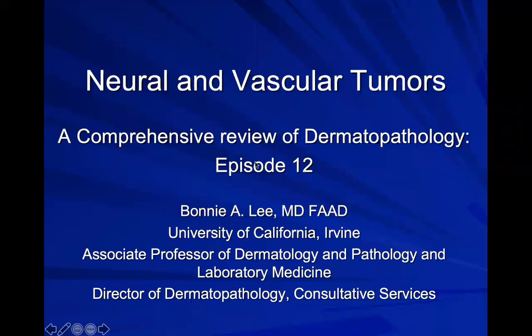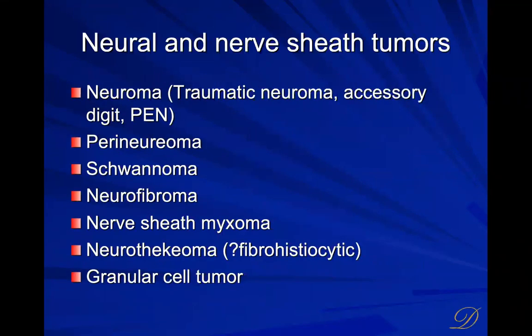Welcome to episode 12 of a comprehensive review of dermatopathology. Today we're going to be covering neural and muscular tumors and how to approach them. We'll start with neural things: both neuromas, nerve sheath tumors, neurofibromas, et cetera.